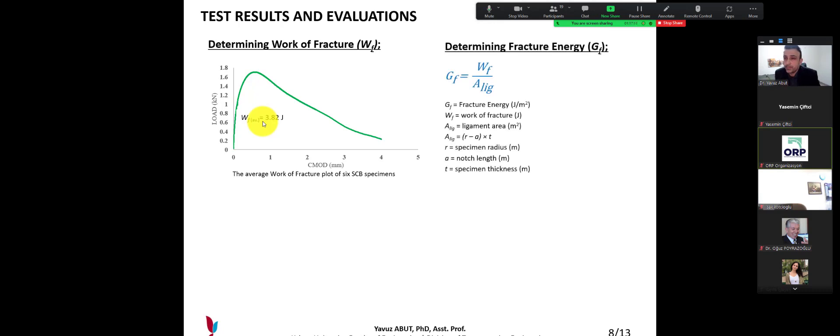The second part is about fracture energy. Fracture energy is divided by WF by ligament area. Ligament area is the function of the cross section of the SCB. For instance, R, A, T: specimen radius, notch length, specimen thickness, etc. And all of the units are in meters.